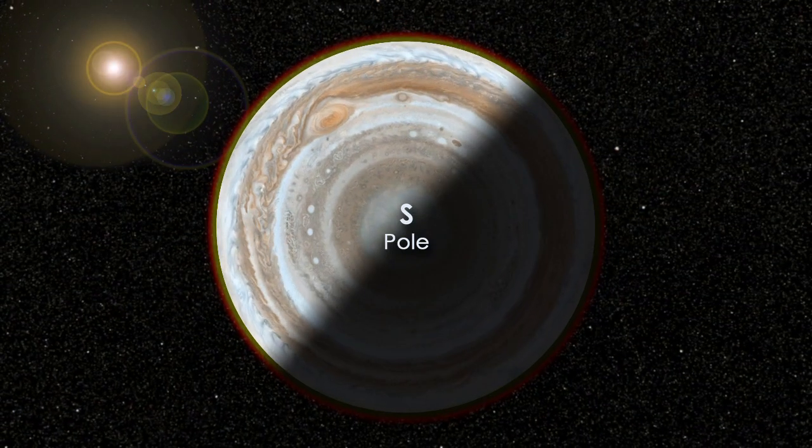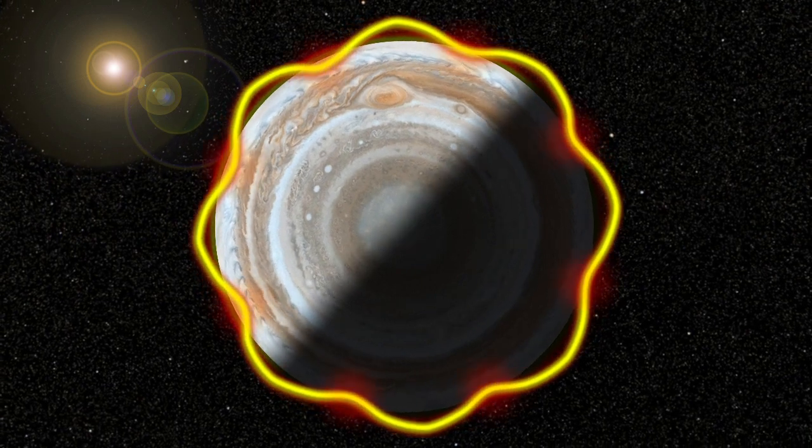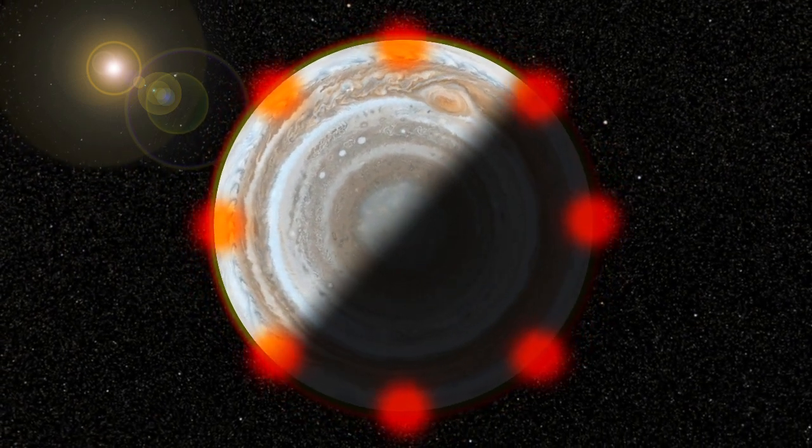At any given time, there are approximately eight to ten hotspots in Jupiter's atmosphere that are spaced roughly evenly apart from one another. We believe that each of the downward portions of this Rossby wave corresponds to the hotspots we see on Jupiter.